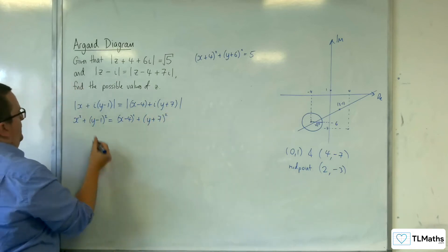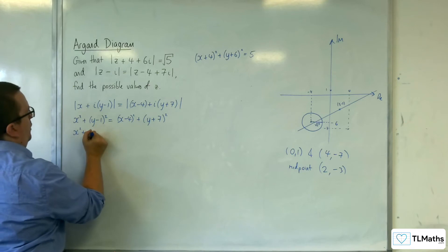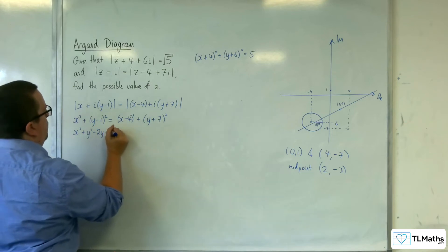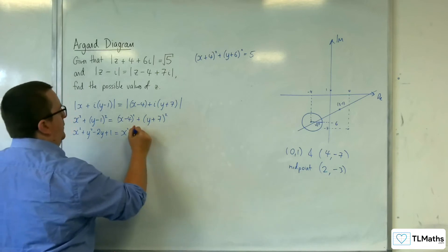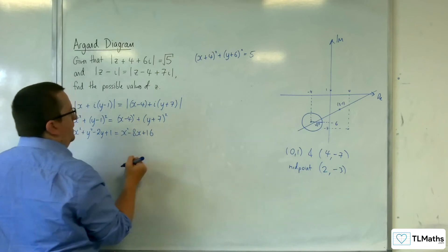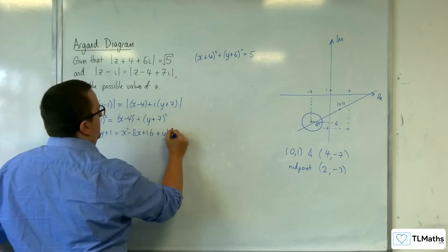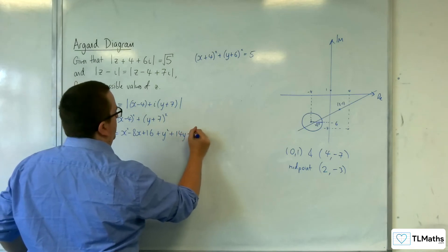Expand everything out. We've got the x squared plus y squared minus 2y plus 1 is equal to x squared take away 8x plus 16 plus y squared plus 14y plus 49.